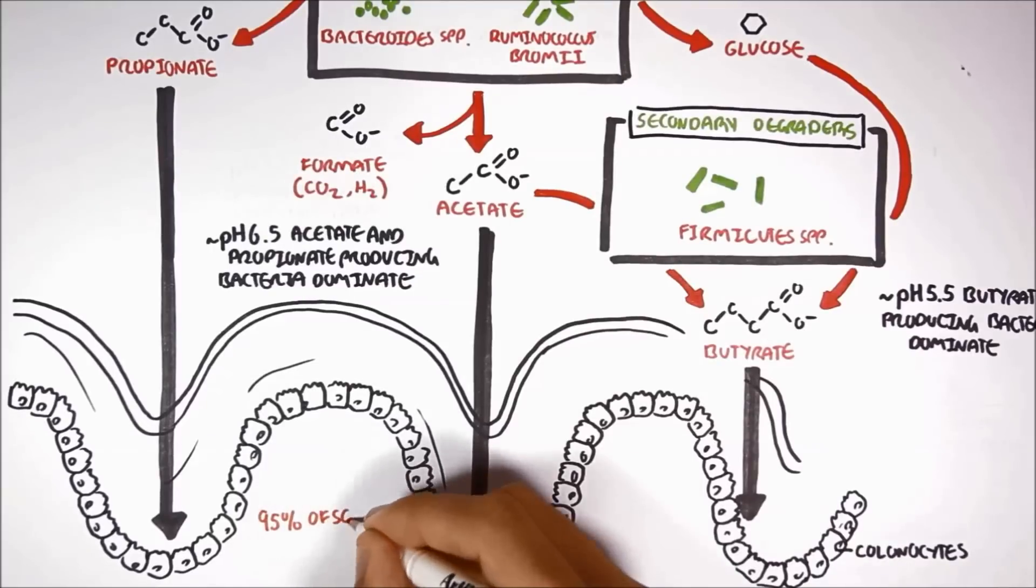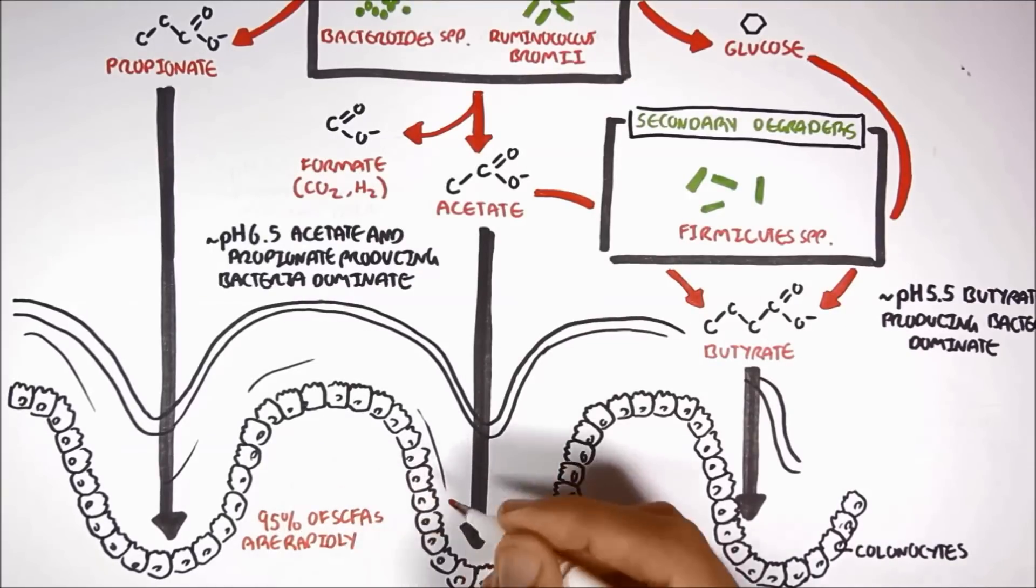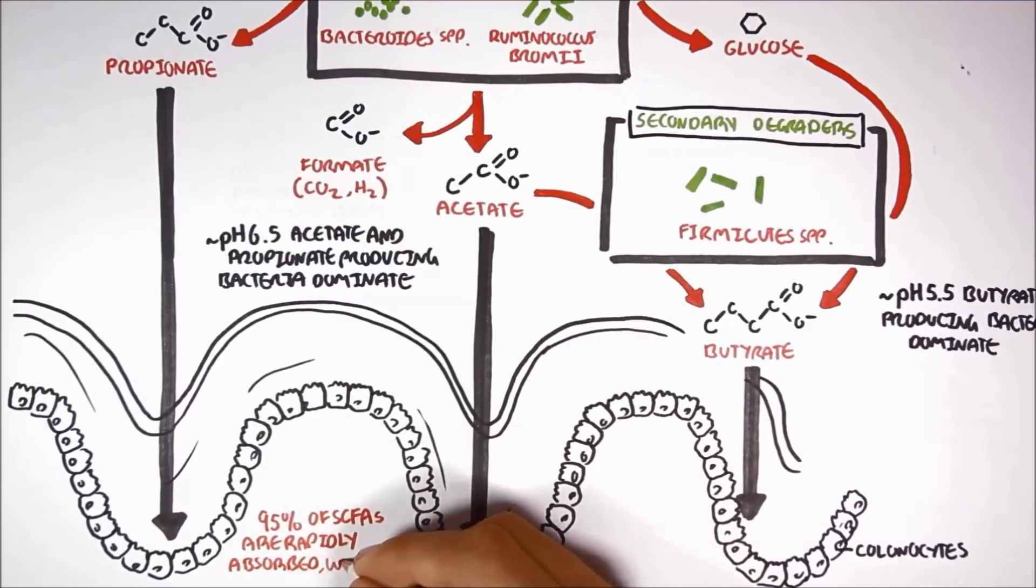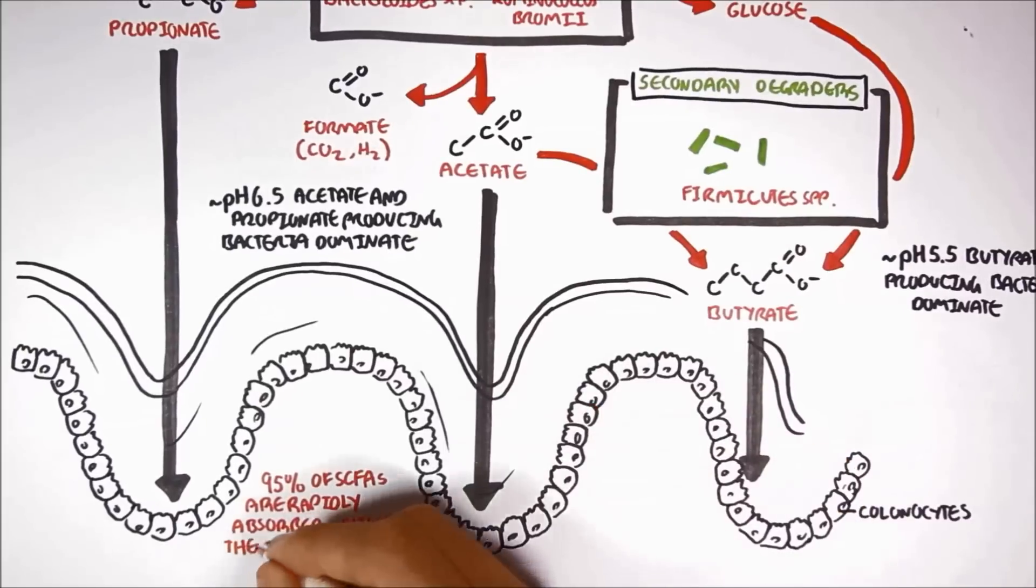About 95% of the short-chain fatty acids are rapidly absorbed by the colon cells, while the remaining 5% are excreted in the feces.